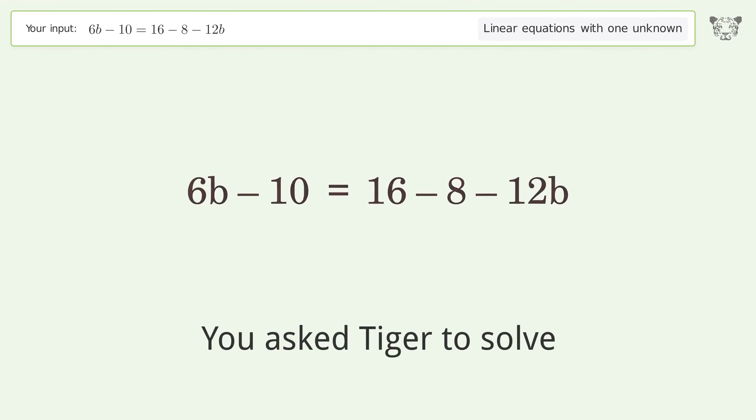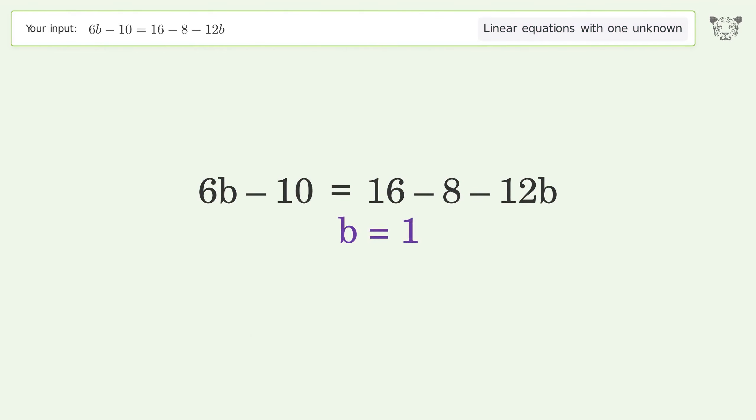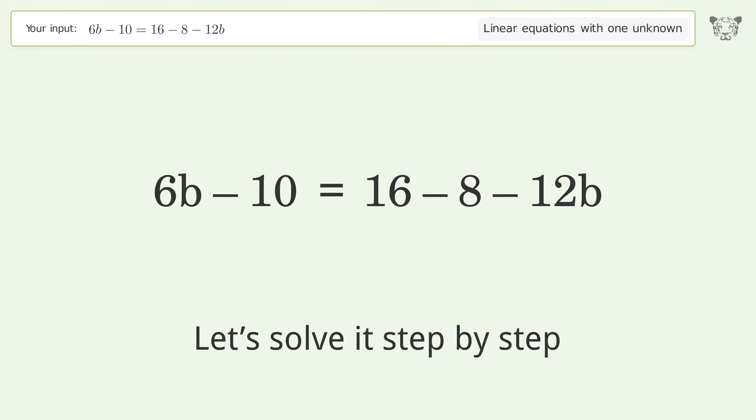You asked Tiger to solve. This deals with linear equations with one unknown. The final result is b equals 1. Let's solve it step by step.